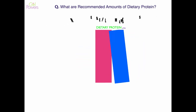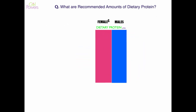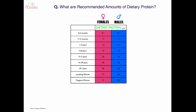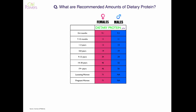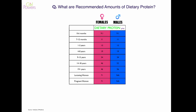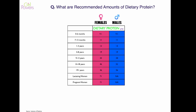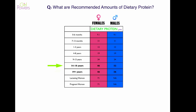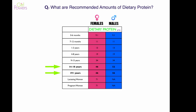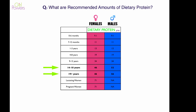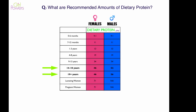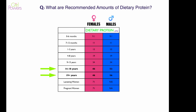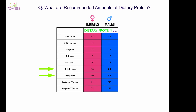What are recommended amounts of dietary protein? In terms of males and females, dietary protein in grams per day — this is from the Institute of Medicine — starts out relatively the same for males and females. When we get to 14 to 18 years, the requirement becomes higher for males, and of course it's also higher for lactating and pregnant women.